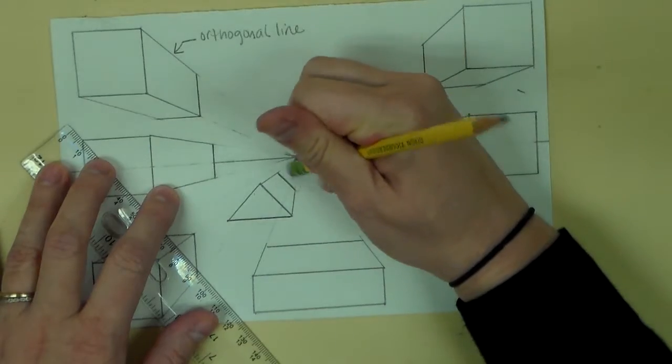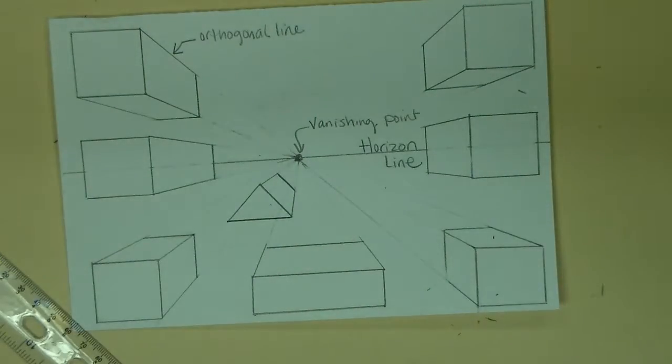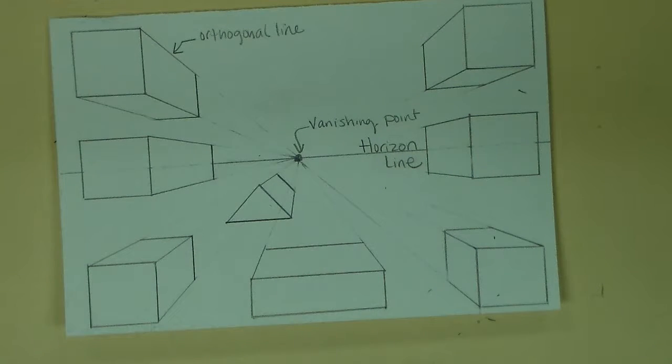Same thing as before, do some cleanup work once I've drawn that in. And now I have a triangle shape. It's now a form instead of a shape.